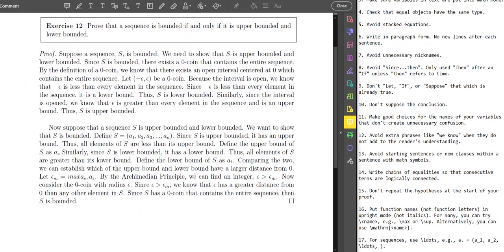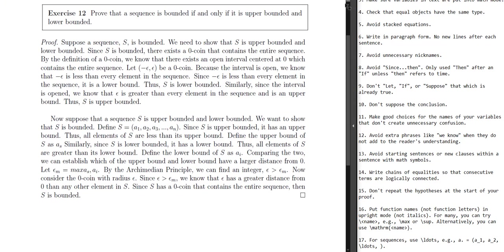Alright, that's proof number one. Number two: we're looking at exercise 12, prove that a sequence is bounded if and only if it's upper bounded and lower bounded. This is an if-and-only-if proof, which means there are going to be two portions: a forward direction and a backward direction. The spacing here is making it pretty obvious — the first paragraph shows one direction and the second paragraph shows the other. That's visually very appealing.